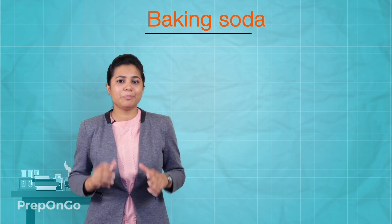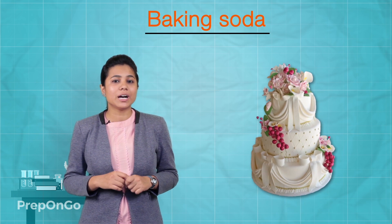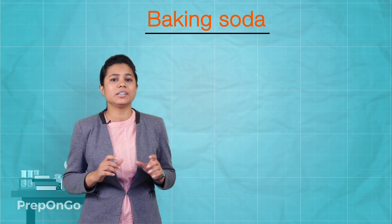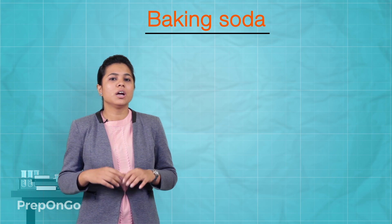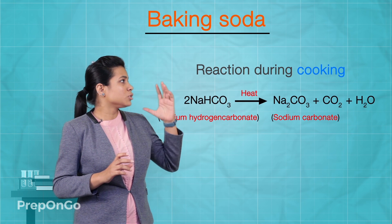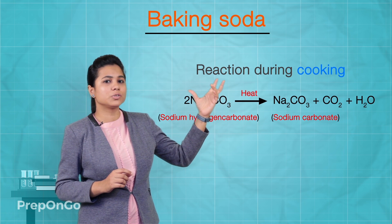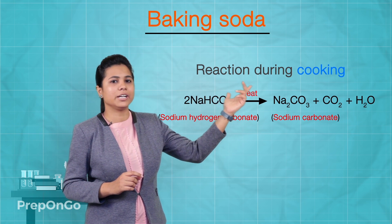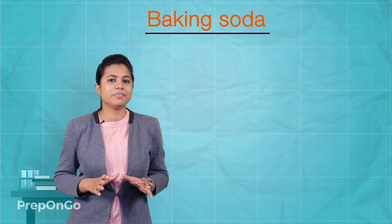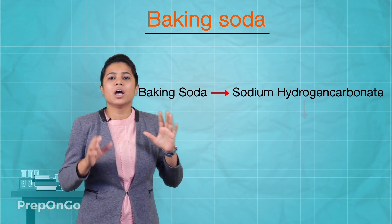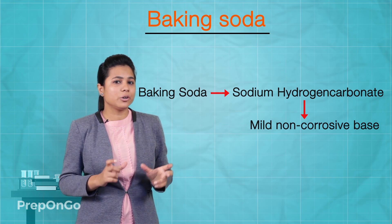The second salt we commonly encounter in day-to-day life is baking soda. The scientific name of baking soda is sodium hydrogen carbonate. It is a mild, non-corrosive base. The baking soda facilitates faster cooking. When sodium hydrogen carbonate is heated, it leads to the formation of sodium carbonate, carbon dioxide, and water.